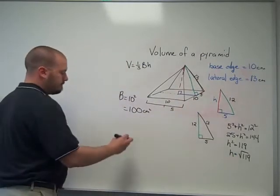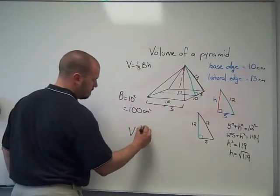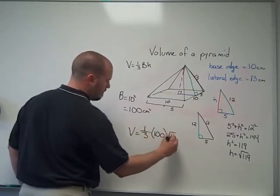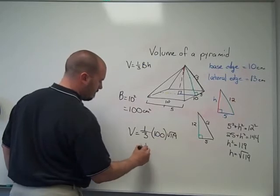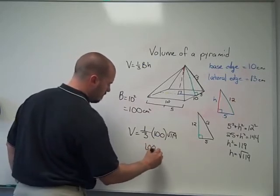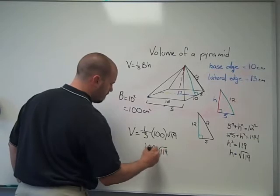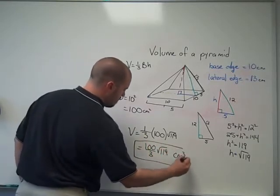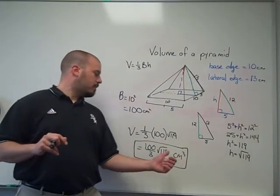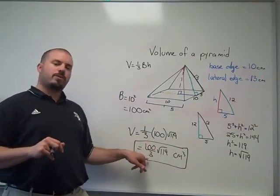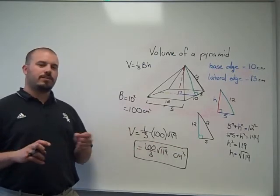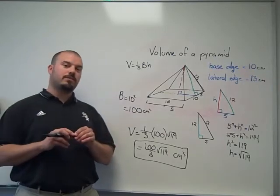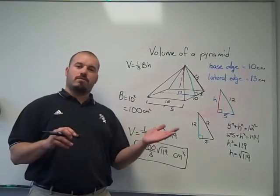So there's the volume of the pyramid. It's 100 times the square root of 119 over 3. Now, obviously, if your teacher would like the decimal answer, then you would just simply type it into your calculator, and there you've got your decimal value.